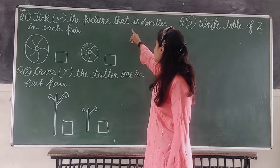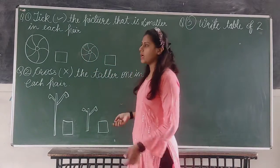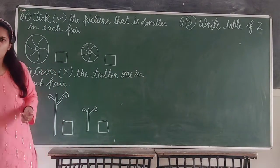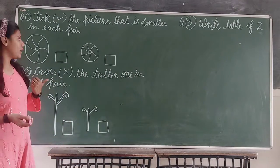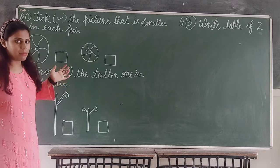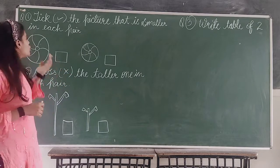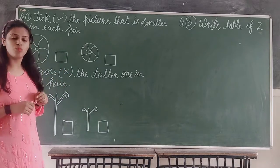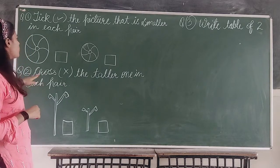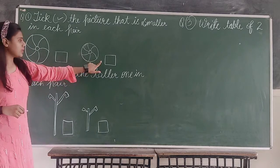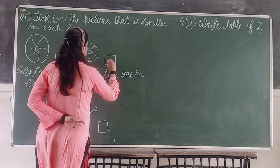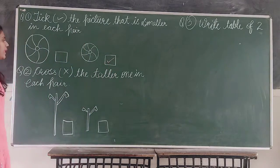take a picture that is smaller in each pair. So, we know what is big or small? Yes, big one is a big one. We have to take smaller object. Okay. So, we have to take here. Okay.